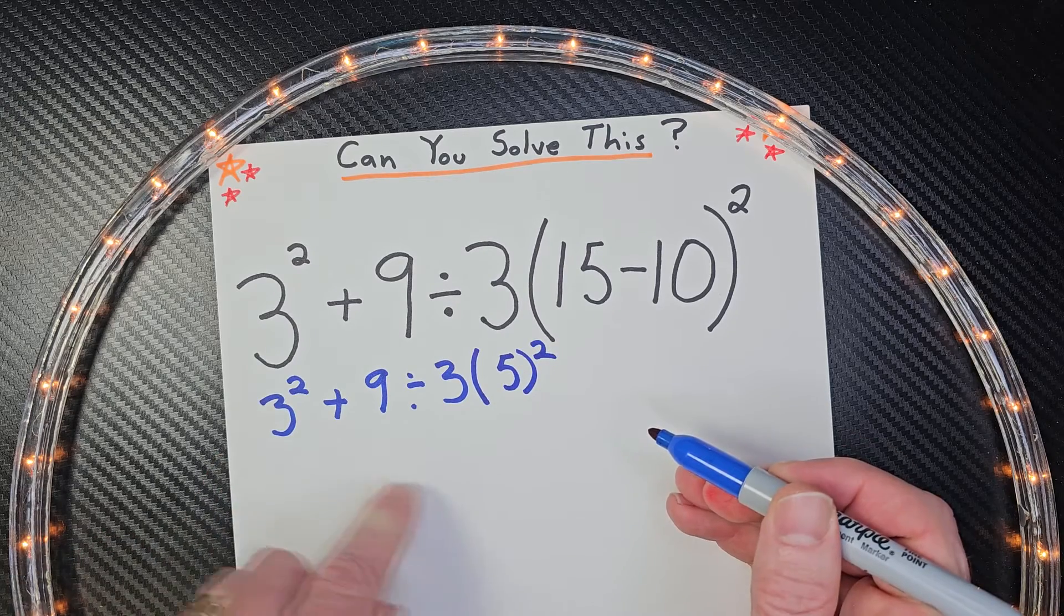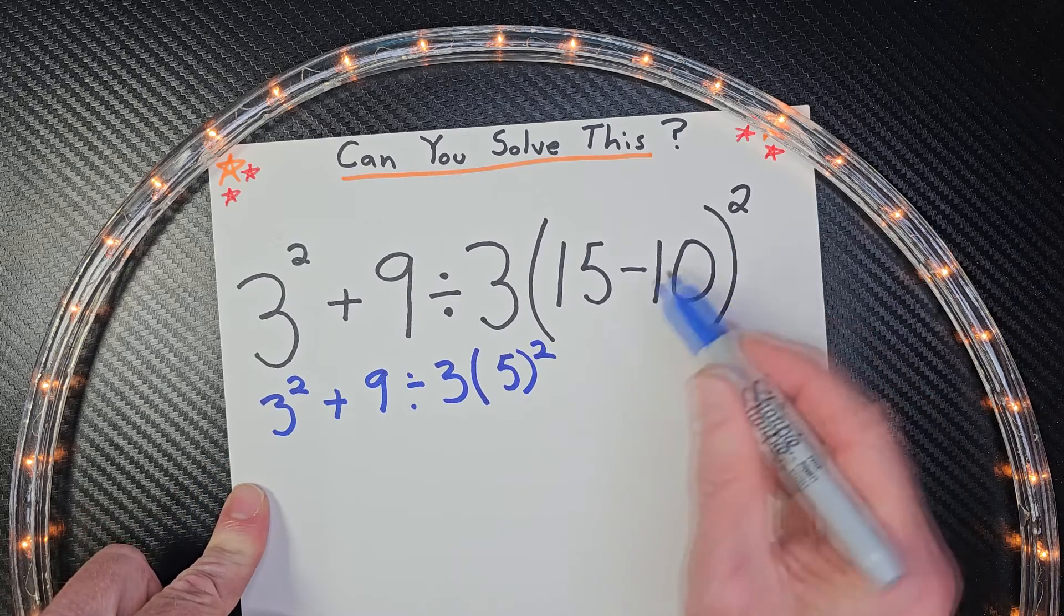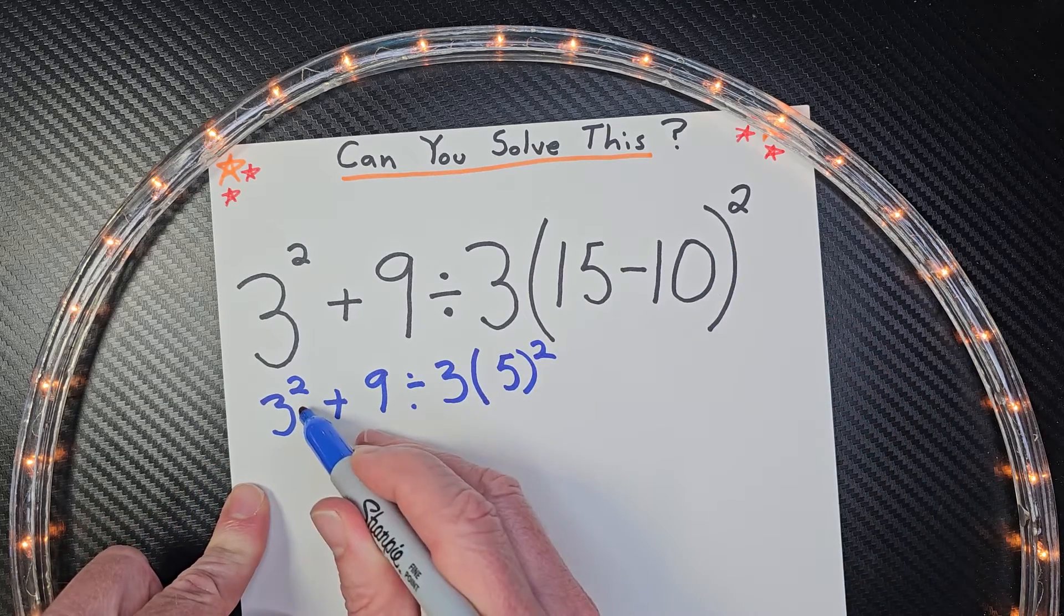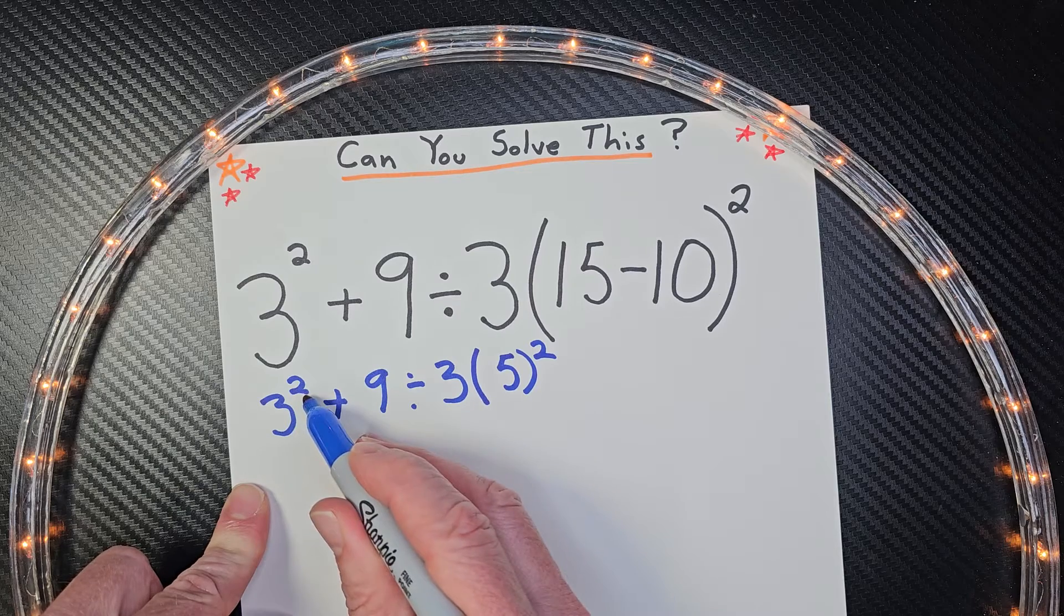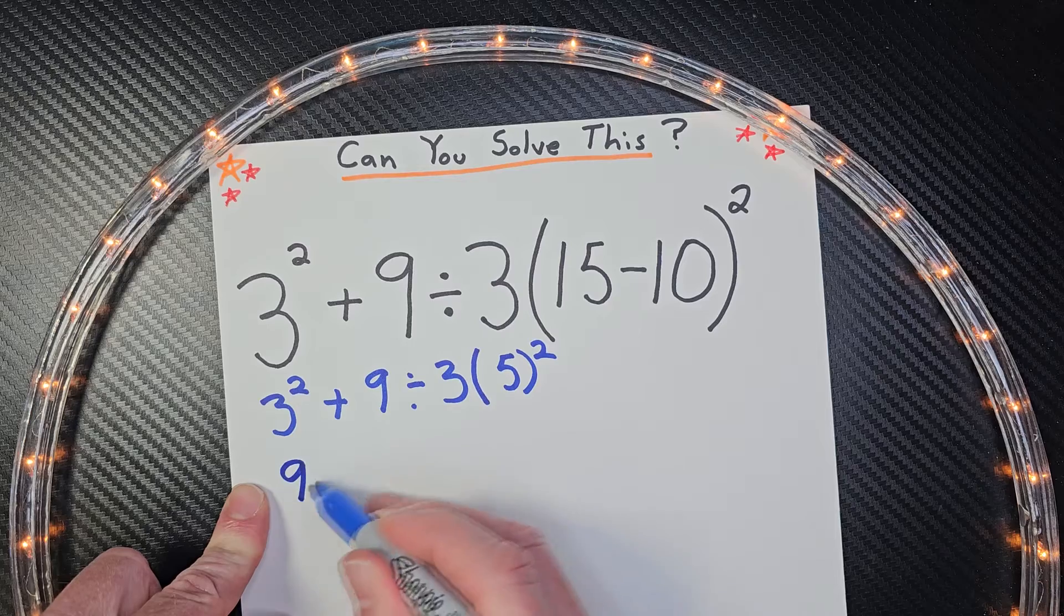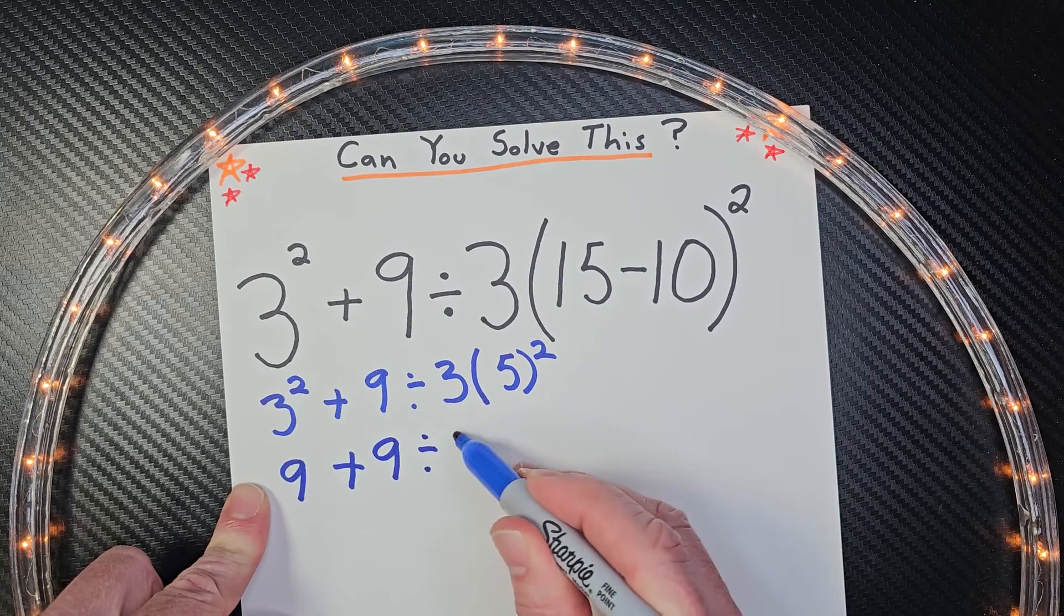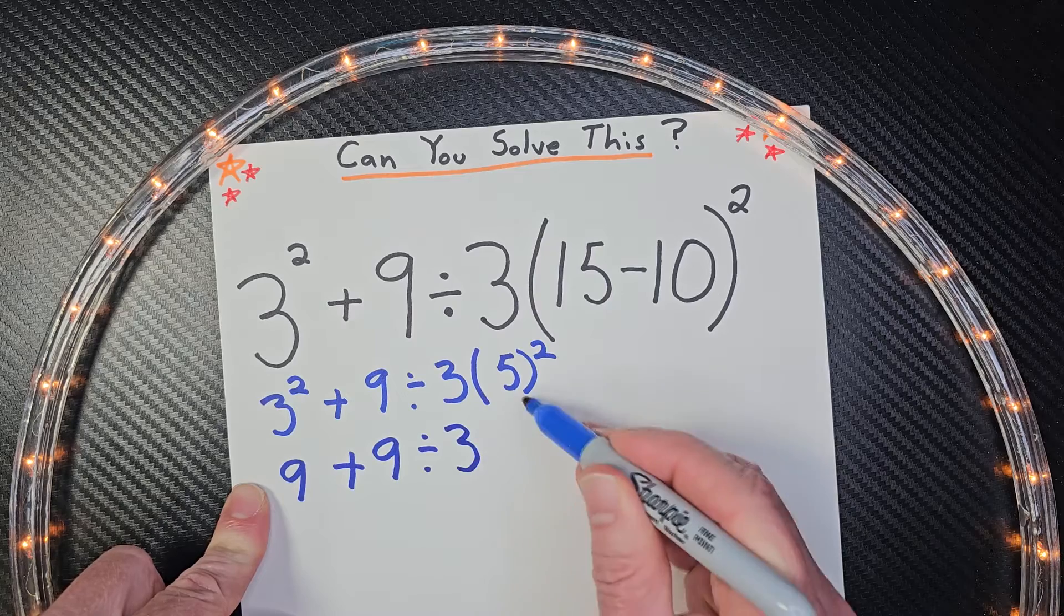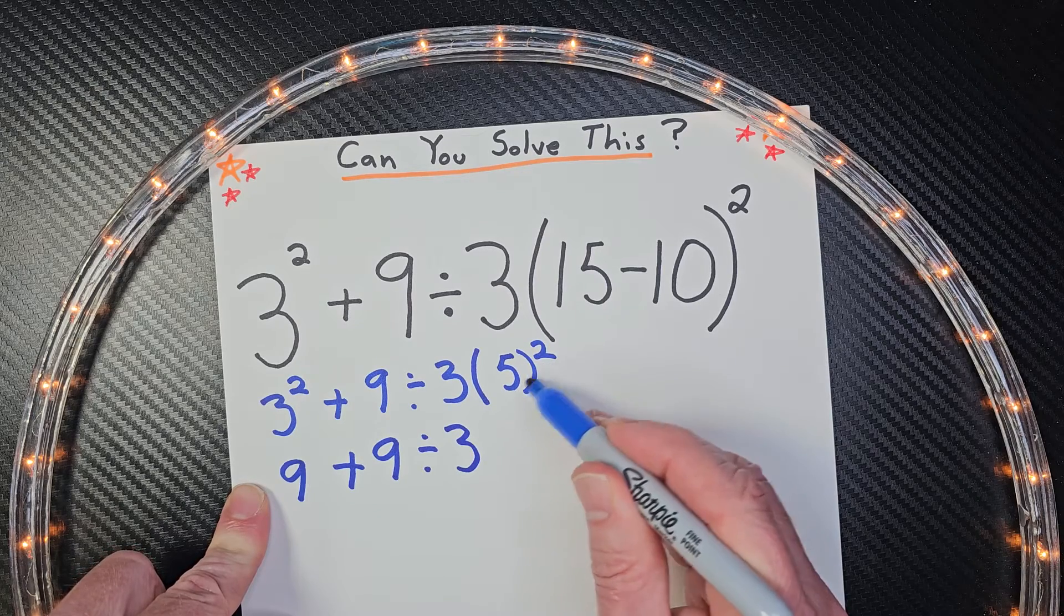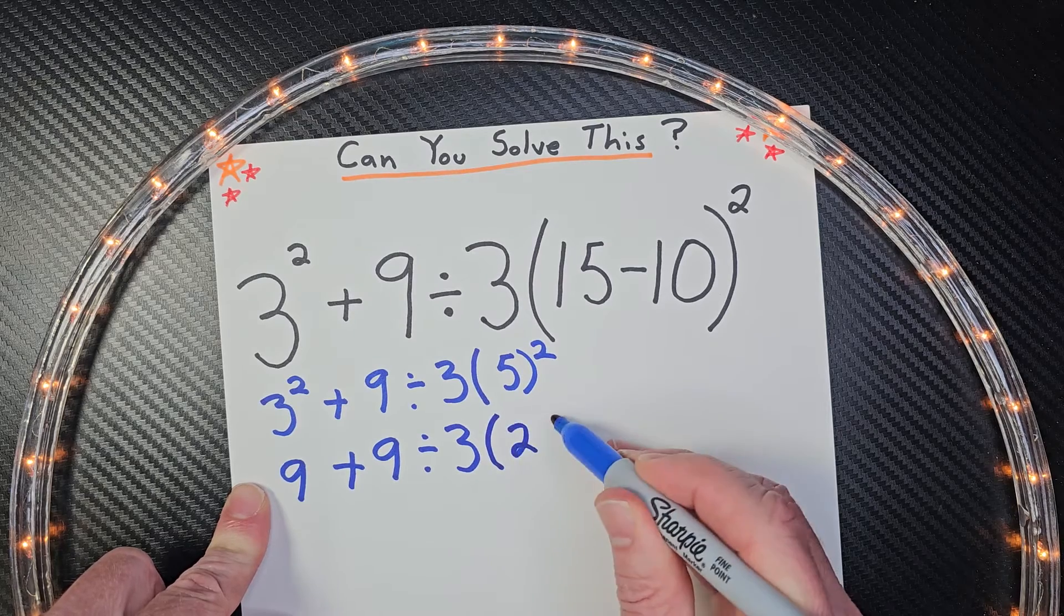All right. Now I just continue on. So I'm going to rewrite this because I need to do my exponents next. So 3 to the second power would be 3 times 3 would be 9 plus 9 divided by 3 times 5 to the second power. 5 to the second power would be 25. All right.